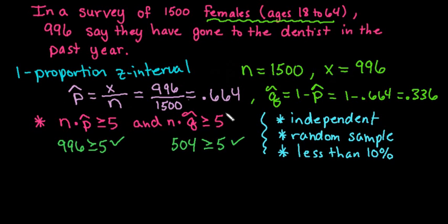So we have enough information to use the one proportion z-interval, we are okay to use this, we're okay to proceed. So let me go ahead and give you the formulas. There are multiple formulas.